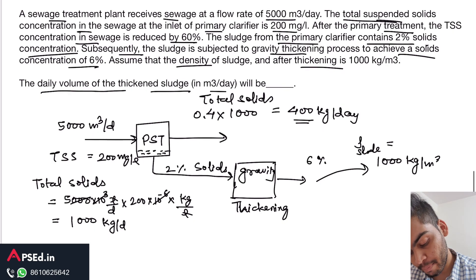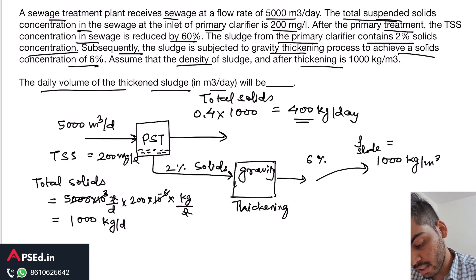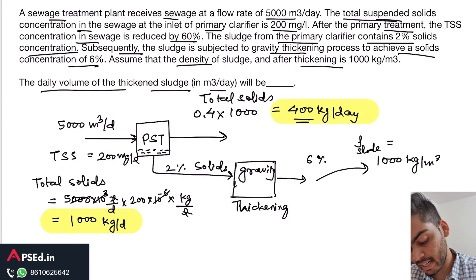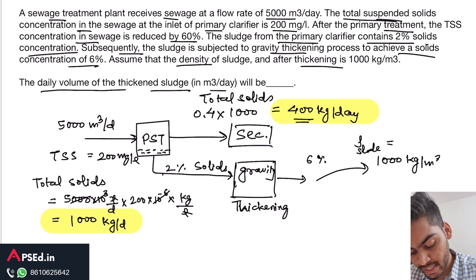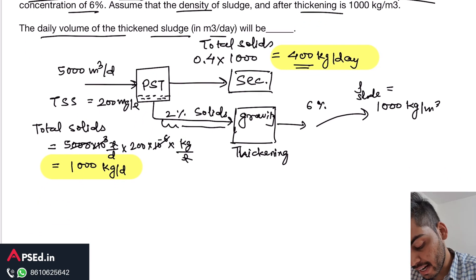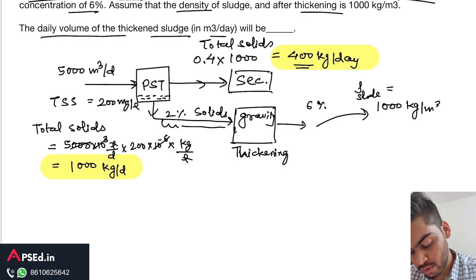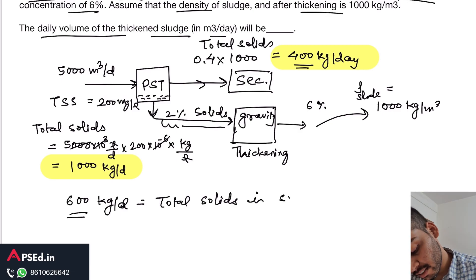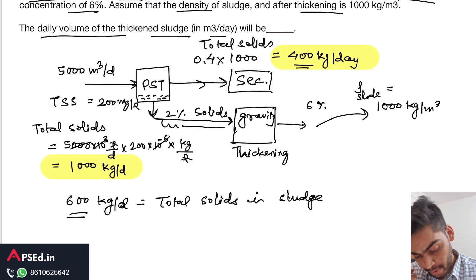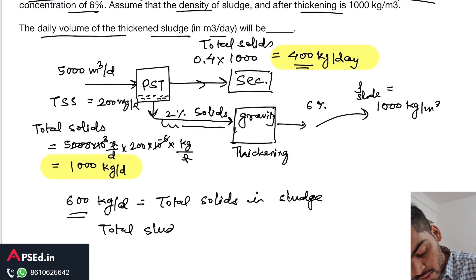To summarize: total solids at inlet = 1000 kg/day. Of this, 400 kg/day goes into the supernatant for further secondary treatment. The remaining 600 kg/day — which is 60% of 1000 — goes into the sludge from the primary sedimentation tank. So in the sludge, the total solids concentration is 600 kg per day.